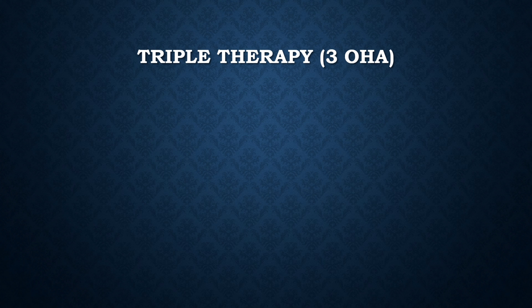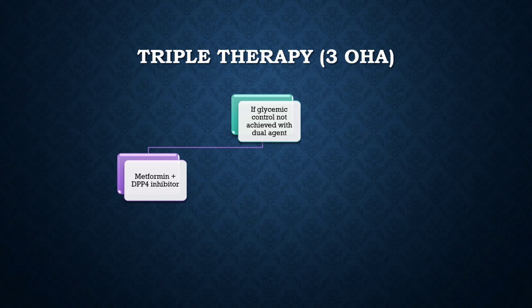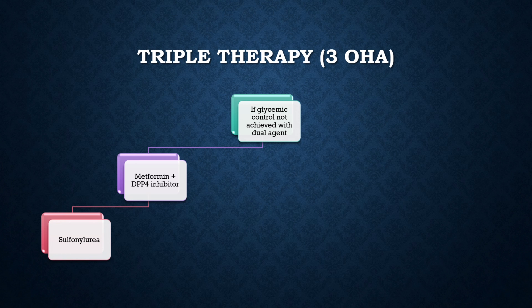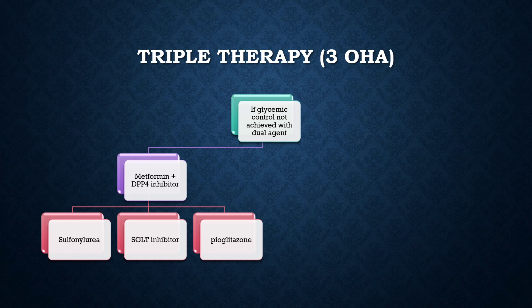If the patient's HbA1c is more than 10, or sugar is not controlled with dual OHA, you must add a third agent. If the patient is already on metformin plus DPP-4 inhibitor like sitagliptin or vildagliptin, add a third agent from the sulfonylurea group or SGLT-2 inhibitor or pioglitazone. Note that sulfonylureas like glimepiride, glipizide, or gliclazide are potent and cheaper but carry a risk of significant hypoglycemia — avoid them in patients with recurrent hypoglycemia.